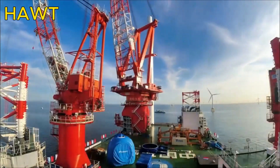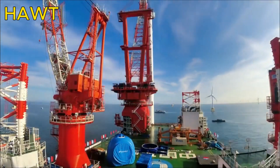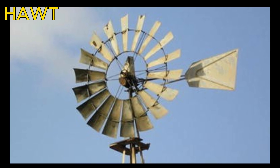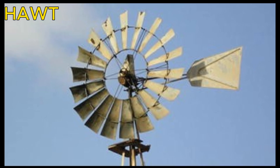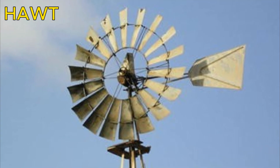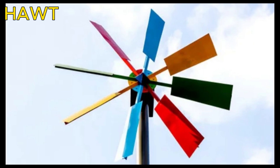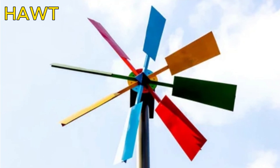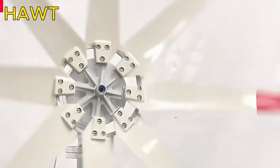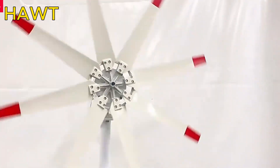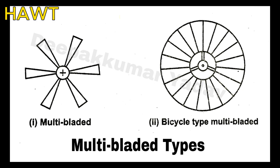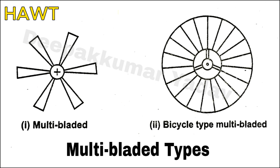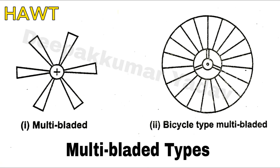Some examples of HAWT blade types are: the multiblade type rotor. This type of rotor has many blades, usually more than six, that are flat or slightly curved. It is suitable for low wind speeds and high torque applications, such as water pumping or grinding. It has a low TSR and a high solidity — the ratio of blade area to swept area.